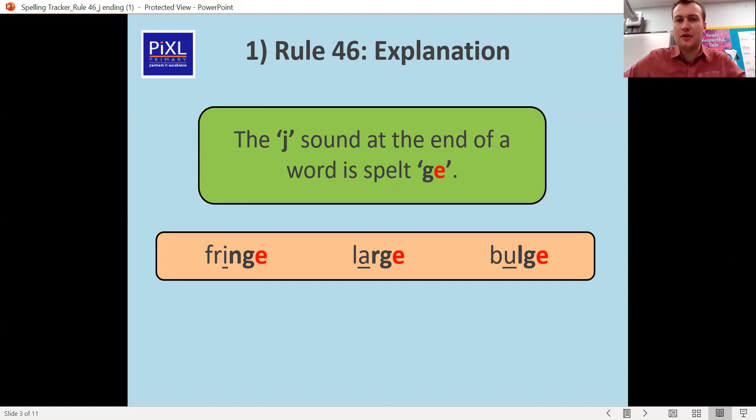Okay, so today we're focusing on the J sound and it's at the end of the word. It's like here, it's spelt with a G and an E for that J: fringe, large, and bulge.